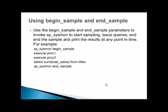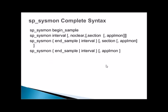For example, you can use sp_sysmon begin_sample, then execute procedure one, execute another procedure, run a query such as selecting totals from a sales table, and then call end_sample. It will have monitored activity while you executed the procedures and query — that sample data is collected so you can check what was the behavior of the system during that time.